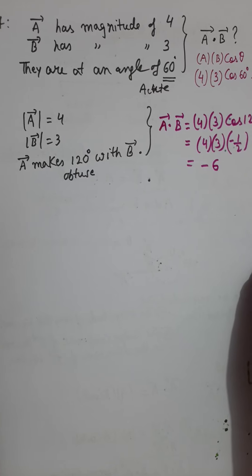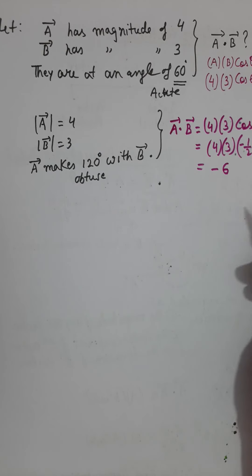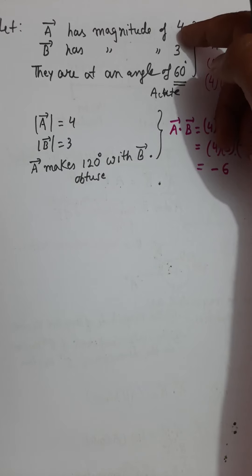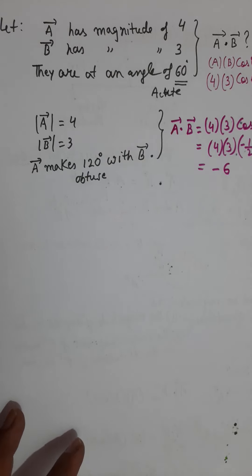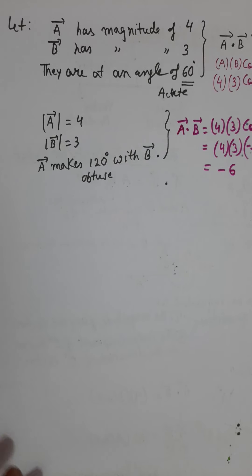Remember this product is not like ordinary algebra. In algebra, 4 times 3 is always 12. But for the dot product, it is 4 times 3 times cosine of the angle between the vectors. If you overlook the angle, your value of A dot B will be incorrect. So cosine theta is very, very important.